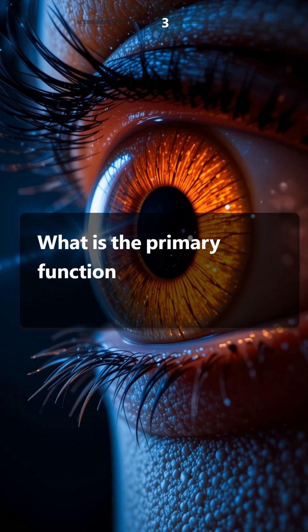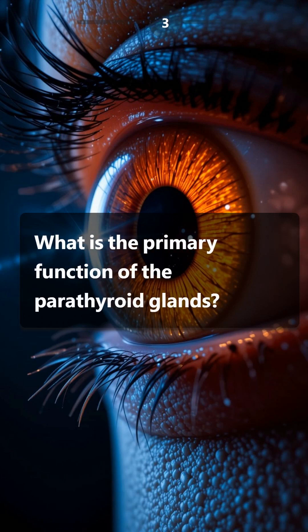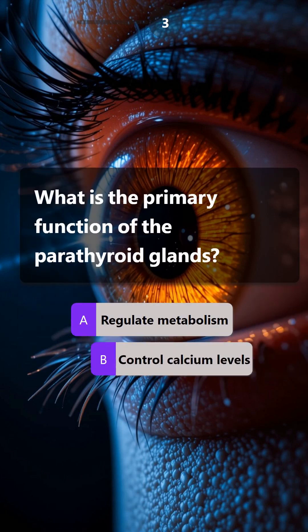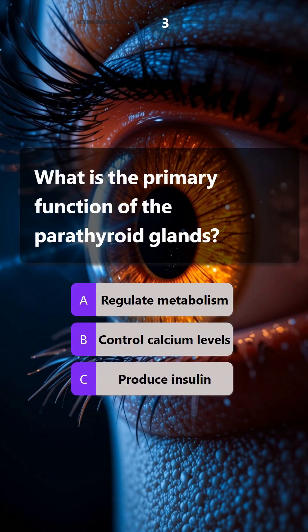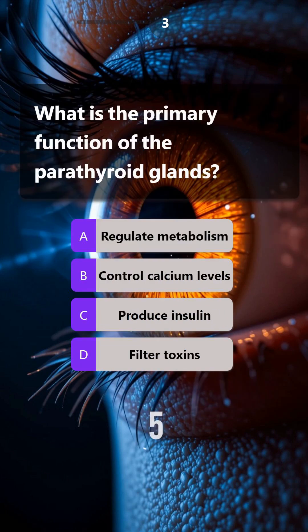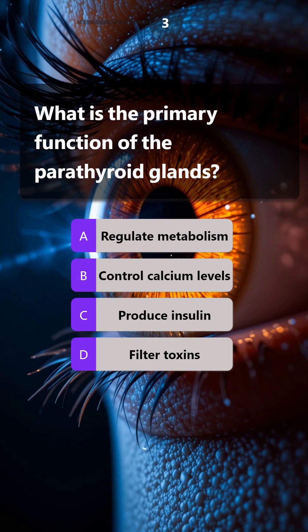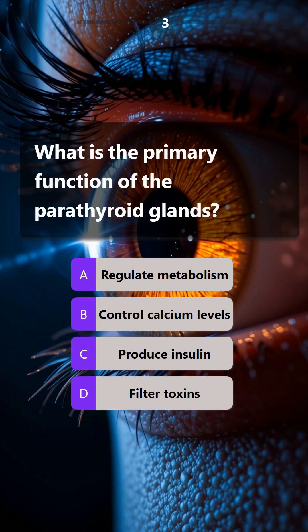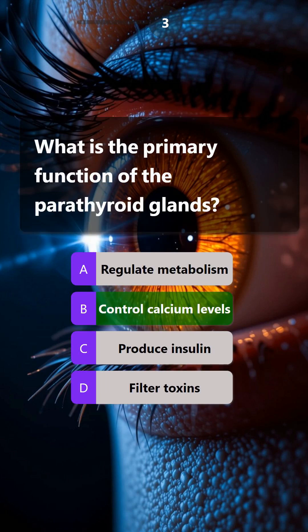What is the primary function of the parathyroid glands? Regulate metabolism, control calcium levels, produce insulin, filter toxins. Answer is: control calcium levels.